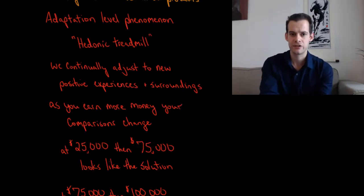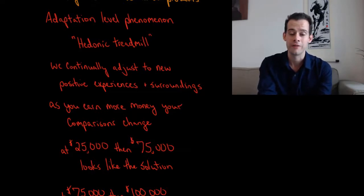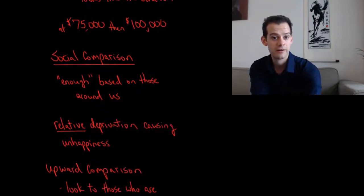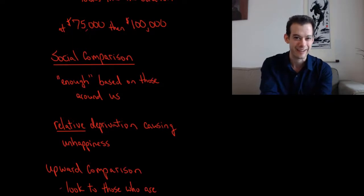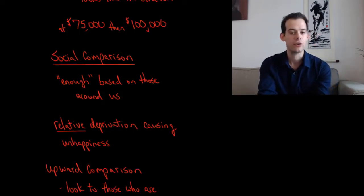This brings us to what's called the adaptation level phenomenon, or it's also referred to as the hedonic treadmill. This is the idea that we continually adjust to our environment. We have new positive experiences and new surroundings and these improve our well-being in the short term. They give us temporary boosts, but it doesn't last. The reason it doesn't last is that we adjust so quickly. As you begin earning more money, your comparisons start to change. You might think if you're earning $25,000 a year that if you were just making $75,000 a year, that would solve all of your problems. Then of course when you get to $75,000 a year, your comparisons start to change. A lot of these people around me now are making $100,000 a year. If I could just make $100,000 then I'd be set. Once you get to $100,000, you'll notice other people are making $150,000, and so on and so on. You constantly adjust to this new comparison.